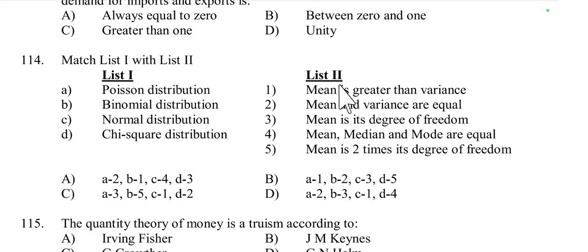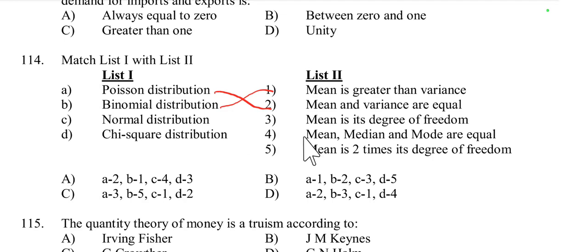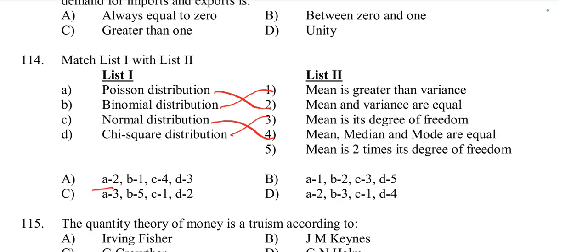Question number 114 (List matching): Poisson distribution — mean and variance are equal. Binomial distribution — mean is greater than variance. Normal distribution — mean, median, and mode are all equal. Chi-square distribution — mean equals its degrees of freedom. The correct matching is A2, B1, C4, D3, which corresponds to option A.